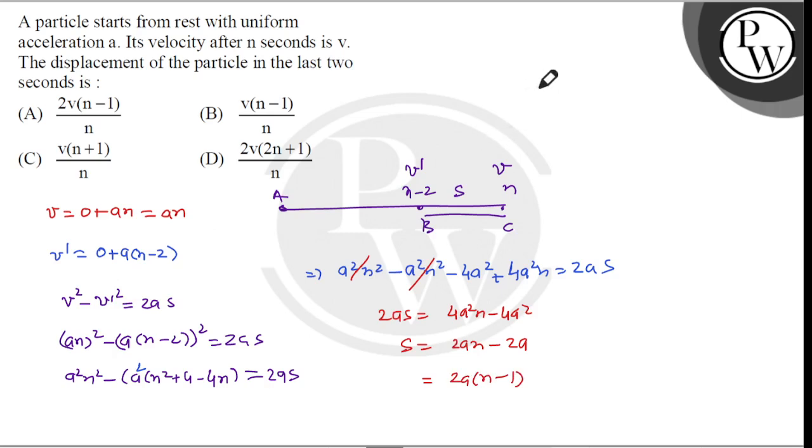Now we substitute the value of v upon n for a. So we have 2 times (n minus 1) times v upon n. This gives us 2v(n minus 1) upon n, which is option A. I hope you understood this solution. Thank you.